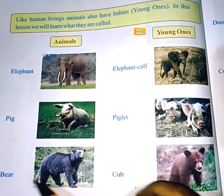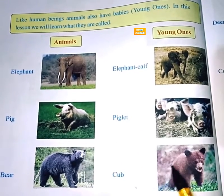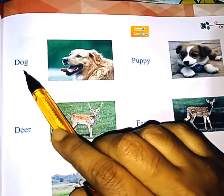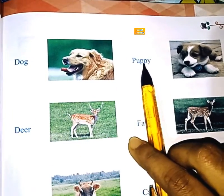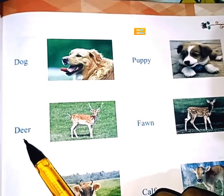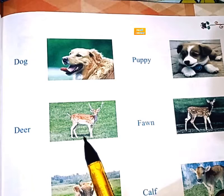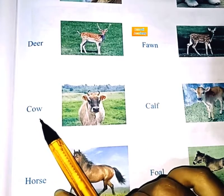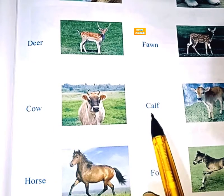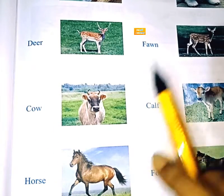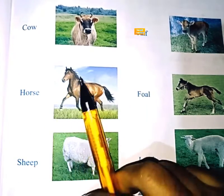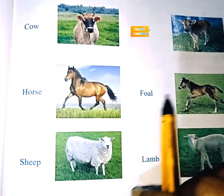Animals and their young ones. Bear. Dog, bear — puppy. Deer. Baby. Cow. Goat — baby, calf. Horse — foal.